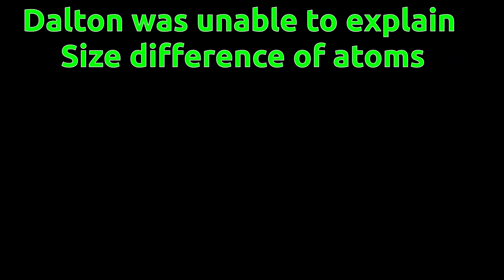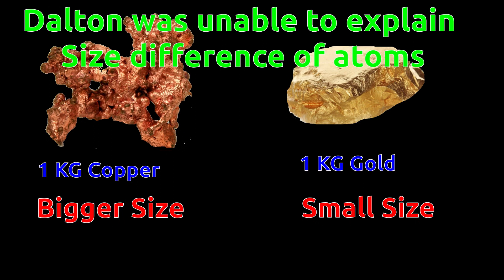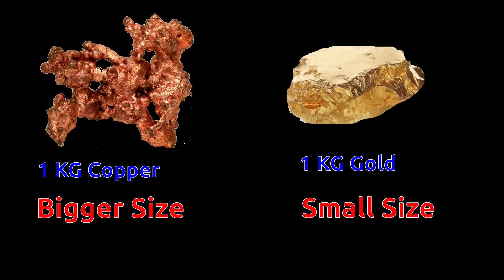His theory was unable to tell the reason behind the different size and mass of different atoms. For example, volume of 1 kg of gold is not equal to 1 kg of copper. Dalton's theory was unable to explain this size or volume difference in different elements.